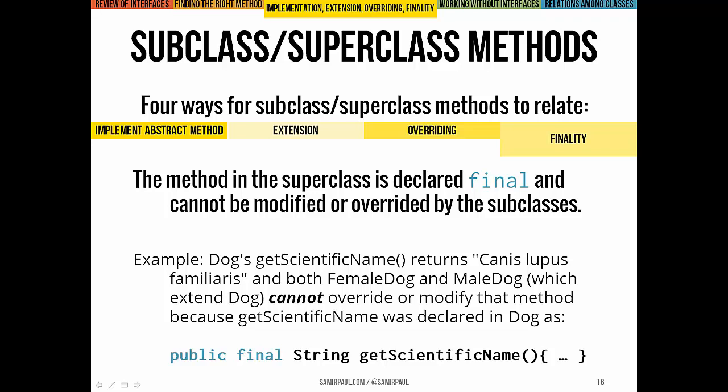The final relationship can be one of finality, where a method in a superclass is complete and we don't want to allow any further modification. We declare that method as final, which means no subclass is allowed to override or change it. An example is the Dog class's getScientificName method — both FemaleDog and MaleDog share the same scientific name, so we declare it final to prevent any subclass from changing that Latin name.